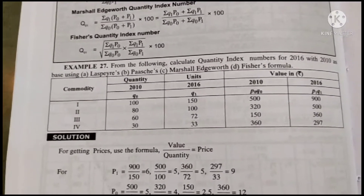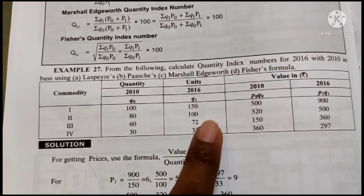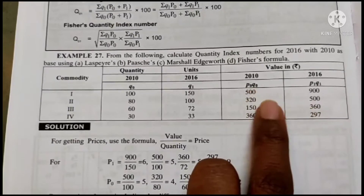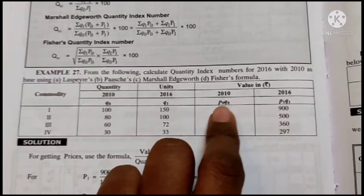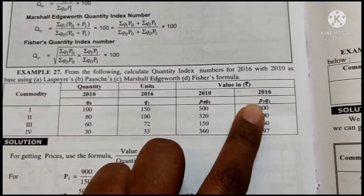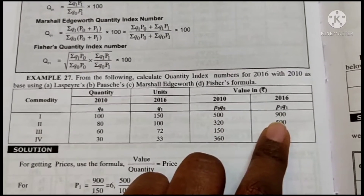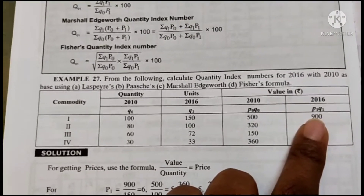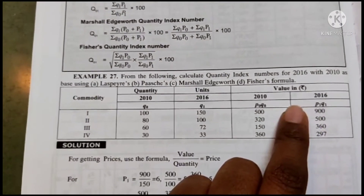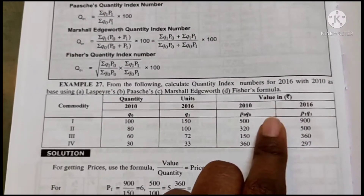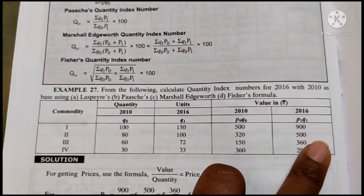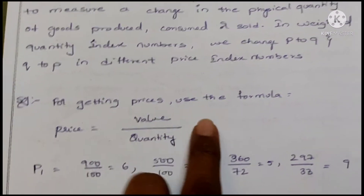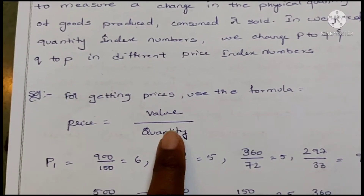In this problem, Q0 and Q1 are given, but only values (expenditure) are given — prices P0 and P1 are not directly given. So we need to find P0 and P1. The formula is: Price = Value ÷ Quantity. This is the same approach used in price index numbers when expenditure is given.